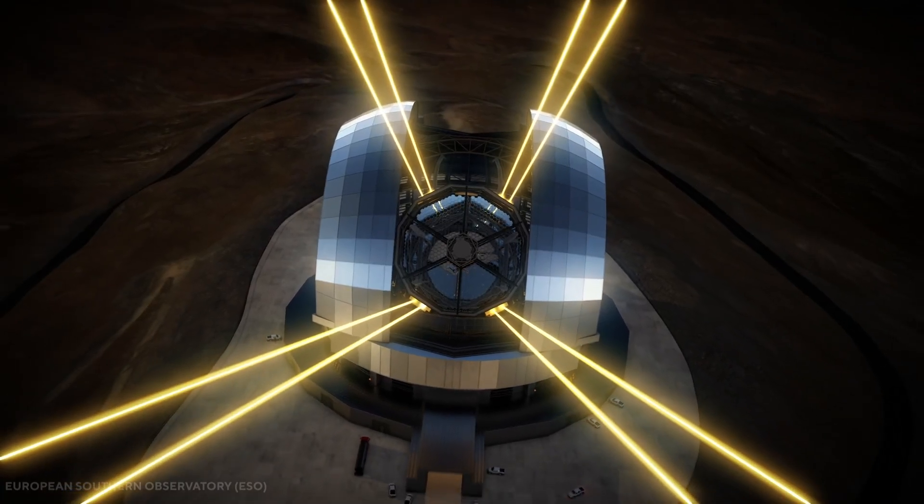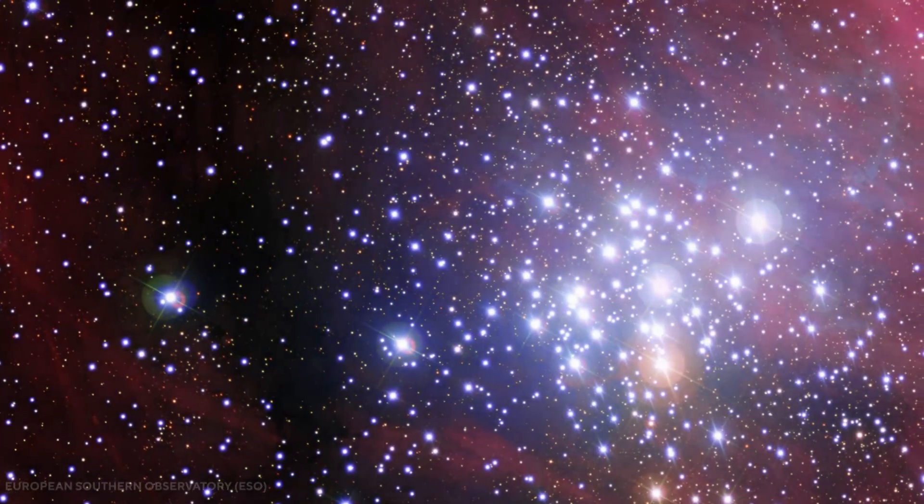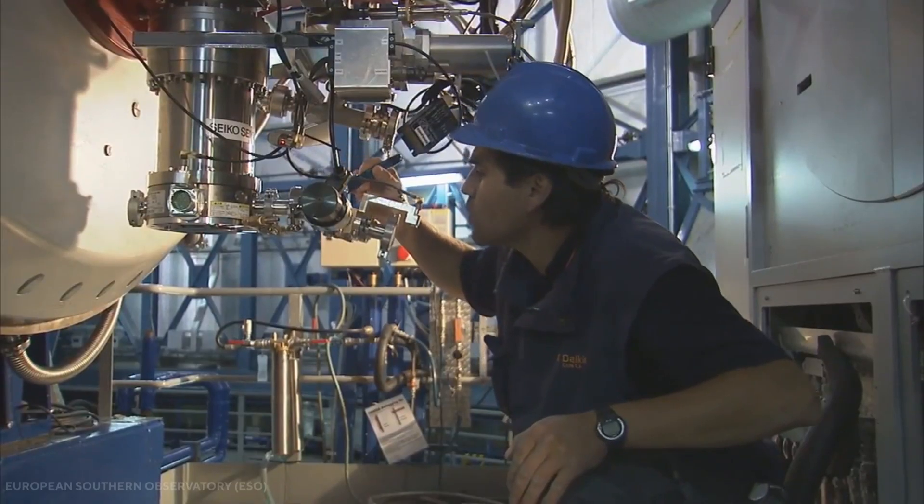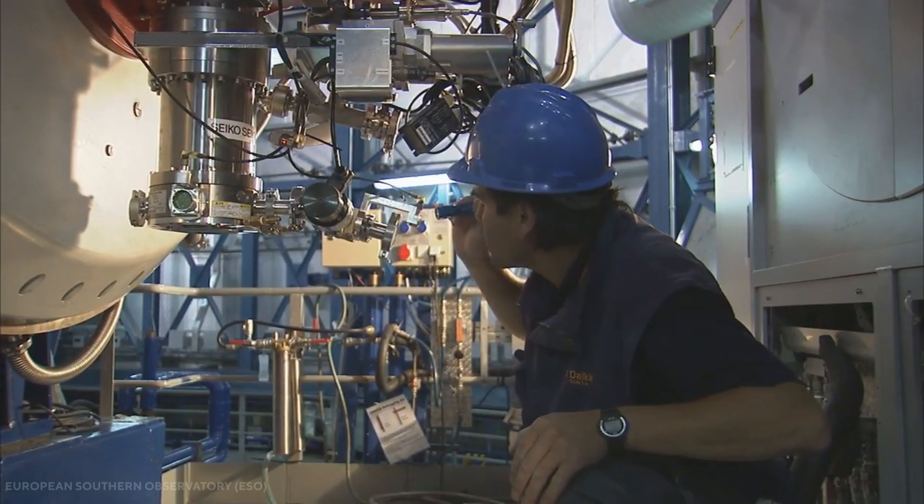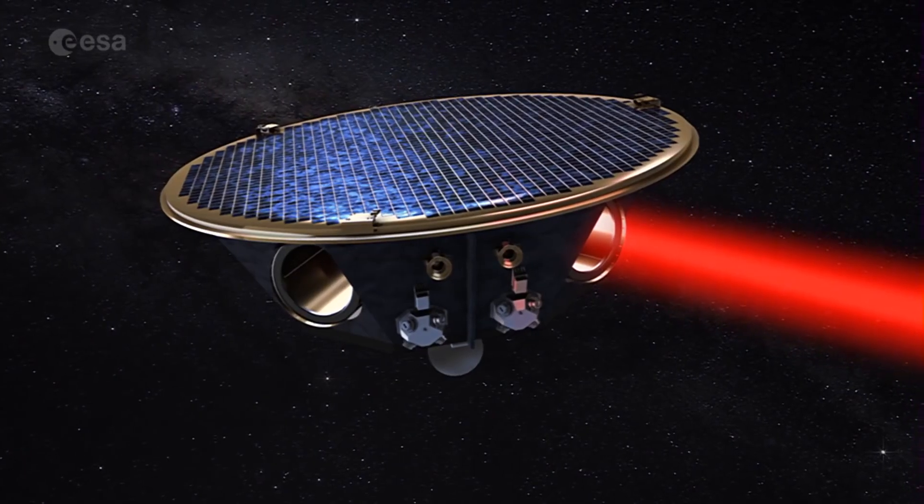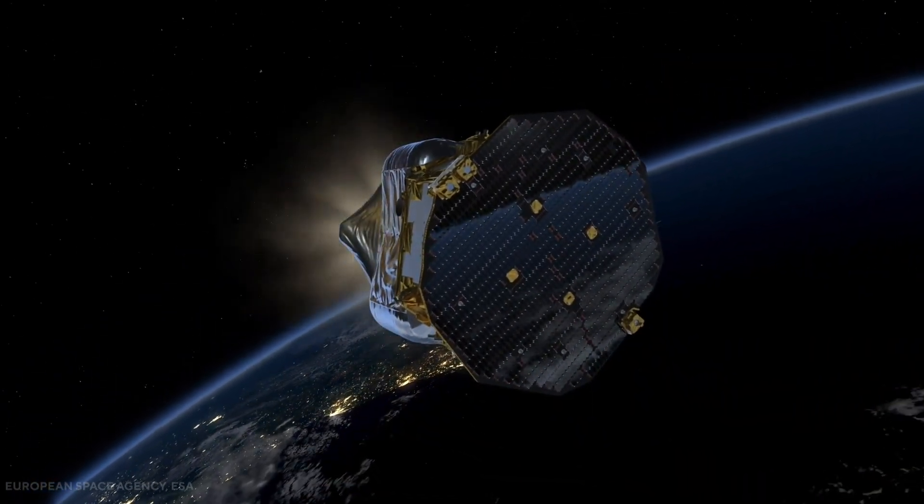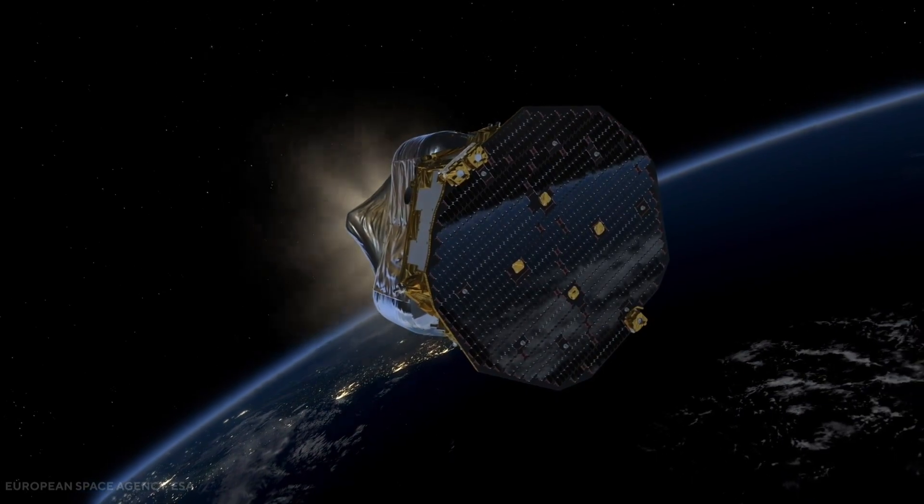LIGO is a large-scale physics experiment and observatory that is designed to detect cosmic gravitational waves, and to use gravitational waves as an astronomical tool. It's possible that the waves will be seen in future experiments measuring the cosmic microwave background, or seen by the European space-based gravitational wave observatory, LISA.